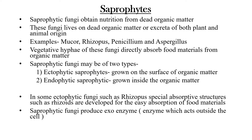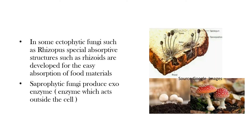In some ectophytic fungi such as Rhizopus, special absorptive structures called rhizoids are developed for easy absorption of food material. Saprophytic fungi produce exoenzymes — enzymes which act outside the cell. You can see here some basidiomycetes, some mushrooms growing on dead decaying organic matter.